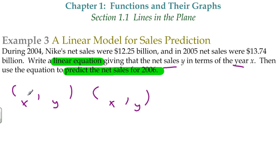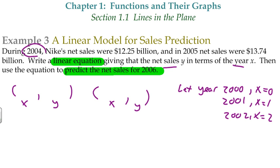Let's think about how we're going to write our x value. I don't want to use 2004 - that's huge. Imagine plotting 2004 and then going up to 12.25 billion. Let's make these things simpler. Let's let the year 2000 be x equals zero. That means if we were at year 2001, x would be one. If we were at year 2002, x would be two. So in 2004, I'm going to call this year four. In year four, they made 12.25 billion dollars. Then in 2005, or year five, they made 13.74.